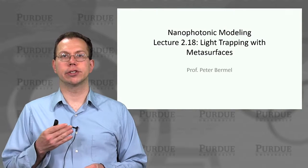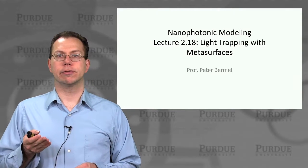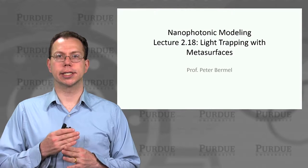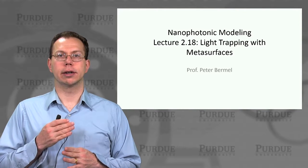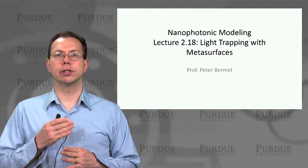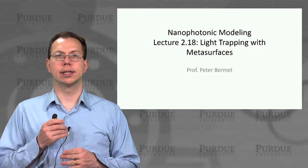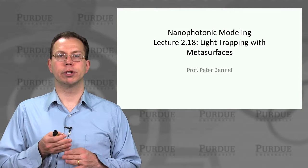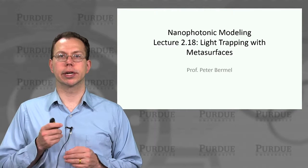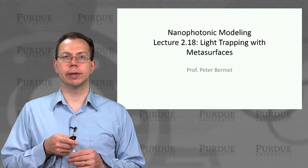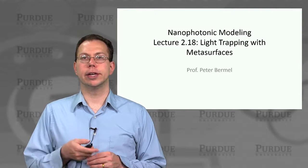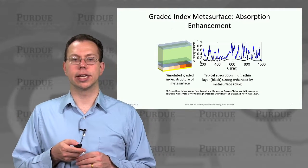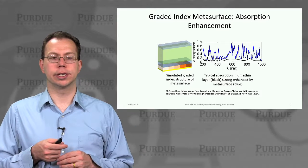Last time we actually showed what a metasurface is — it's basically like a mirror that reflects at an angle that's different from the angle of incidence. We also showed a simple example of what kind of computation we can do in S4. And now we'll continue to look at the impact of metasurfaces on light trapping in solar cells.